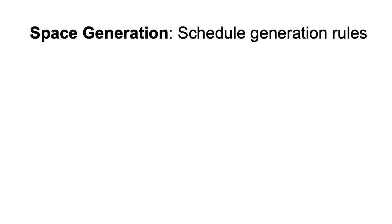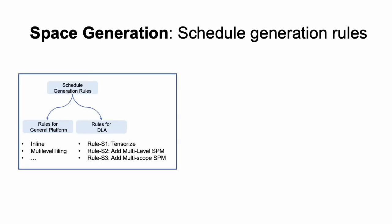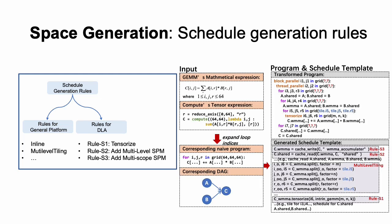The schedule generation process is similar to Answer, so we introduce it briefly. The schedule template is generated by applying generation rules in reverse topological order of the computation graph. Our generation rules include rules for general platforms and rules for deep learning accelerators. This figure shows an example of the generated schedule template for a GEMM operator on TensorCore.